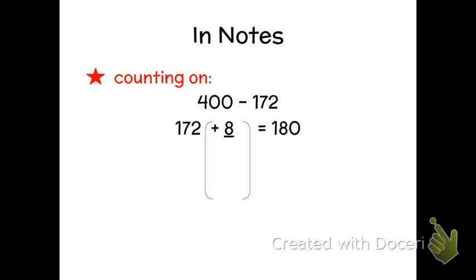400 minus 172. So when I do counting on, I start with whatever number I'm subtracting. So in this case I start with 172. 172 is being subtracted from 400. Well, I count on to get to those next places that are a lot easier for me to work with. So 172 plus 8 gives me 180.